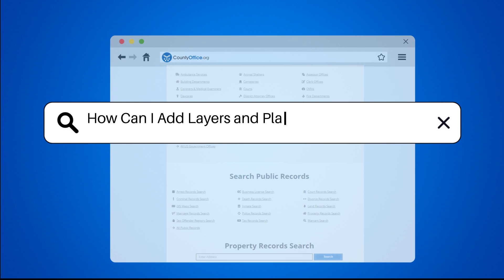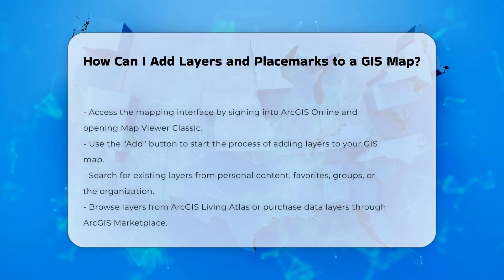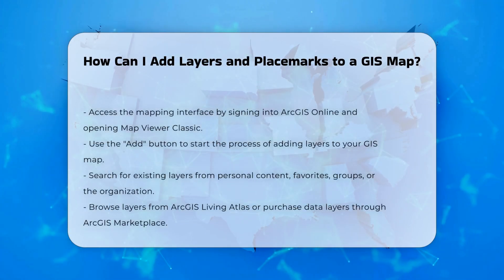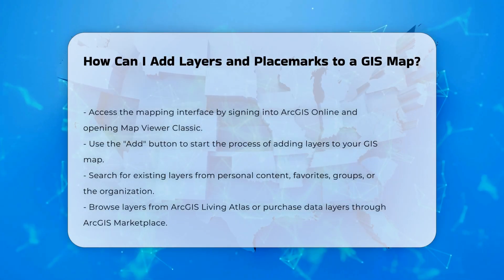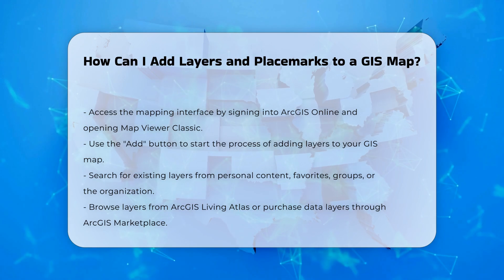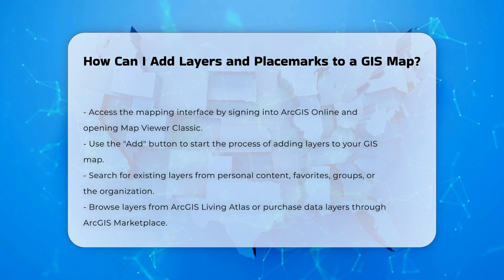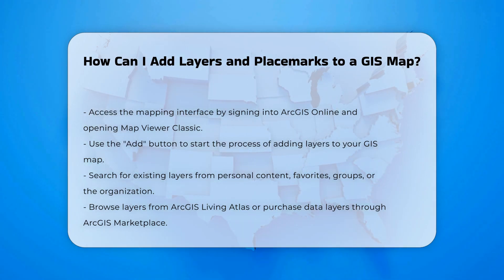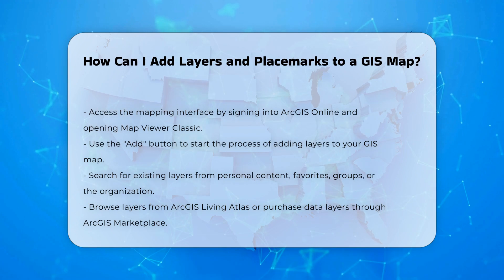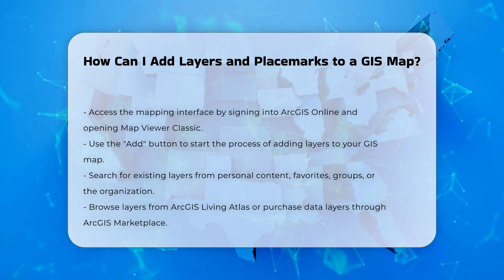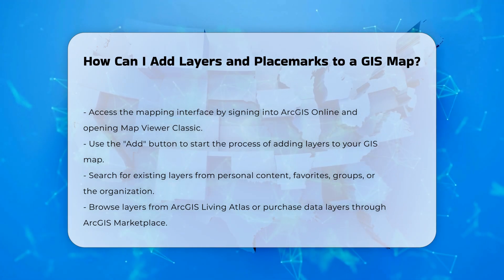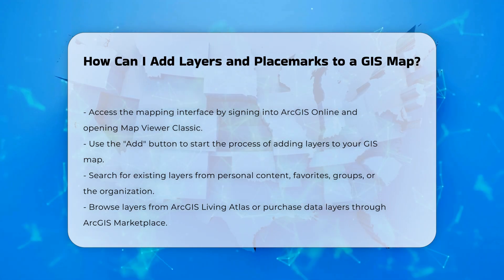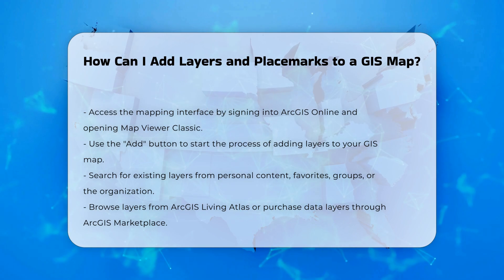How can I add layers and placemarks to a GIS map? To add layers to a GIS map, you first need to access the mapping interface. For example, in ArcGIS Online, you start by signing into the site and opening the Map Viewer Classic. Here, you can click the Add button to begin the process.